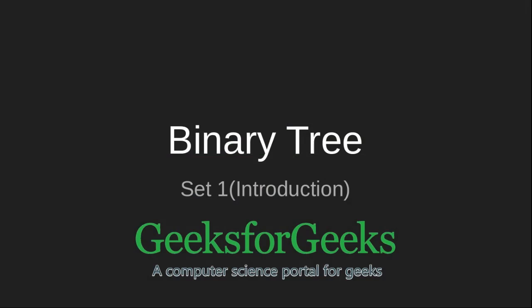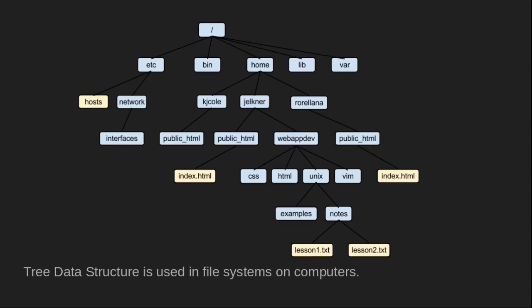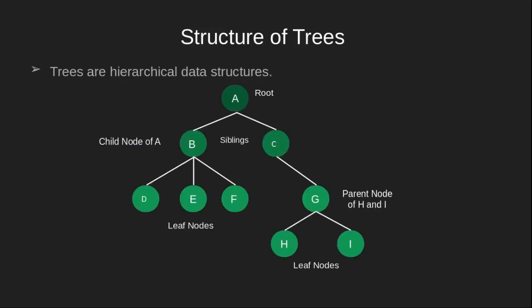In this lecture we learn about some of the basics of binary trees. Unlike linear structures like arrays or linked lists, trees are hierarchical data structures. This type of data structure is used when the information to be stored forms a hierarchy naturally, just as in the case of a file system on computers.